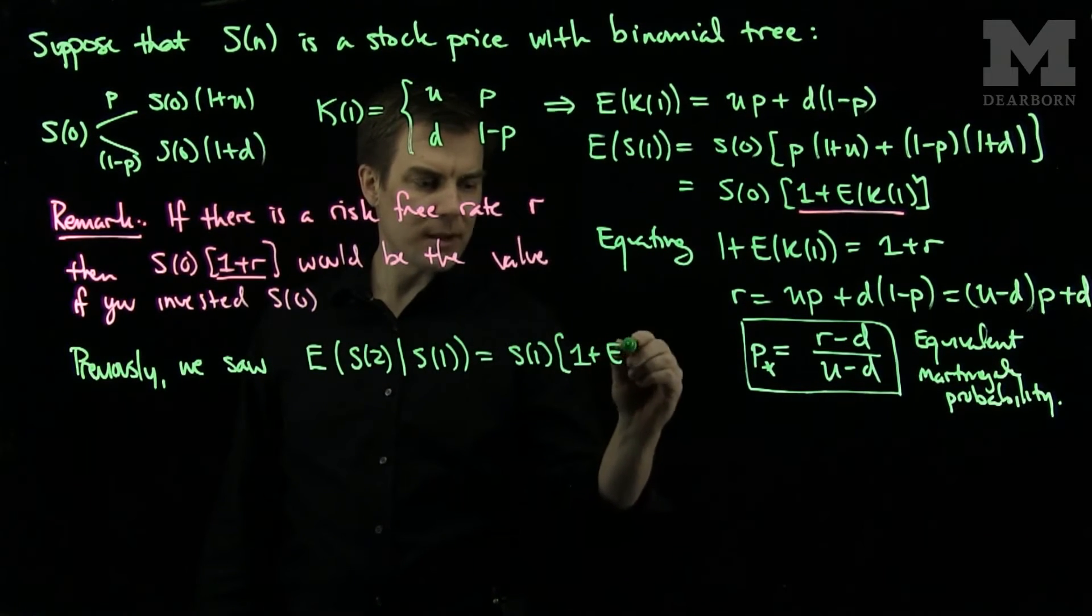And what this implies is this property, which is very important, is referred to as the martingale property of the discounted stock prices. So this is our martingale property of S_n.